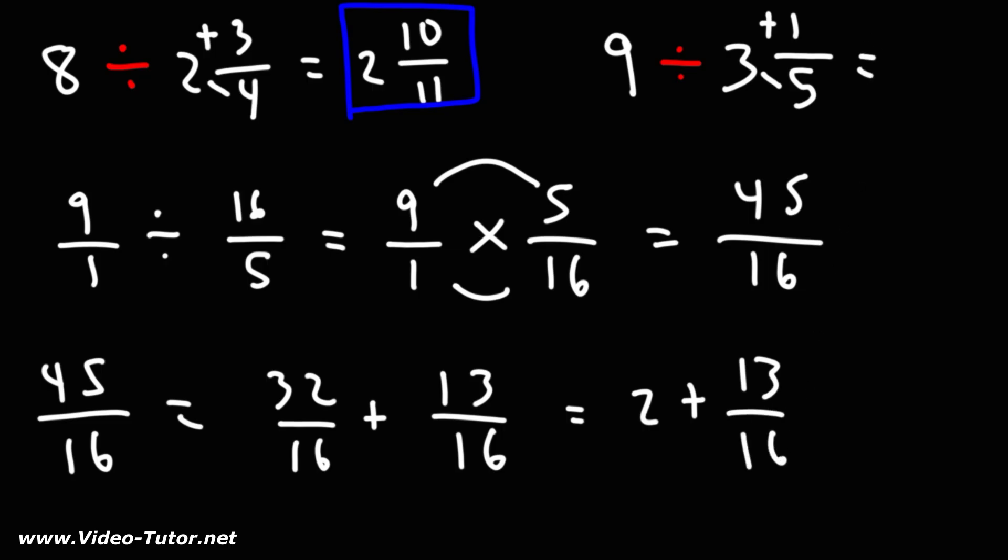We can write it as a mixed number, 2 and 13 over 16. That's the answer for this second example. That's how you divide a whole number by a mixed number.